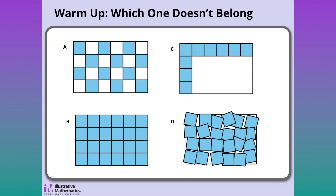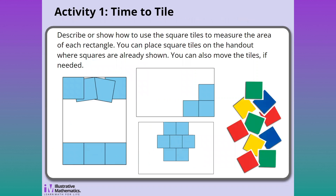There's no right or wrong answer to 'Which One Doesn't Belong,' and it gives teachers an opportunity to see what prior knowledge, experiences, and language students are bringing to the day's lesson. The warm-up is followed by an activity where students are asked to use square tiles to find the areas of rectangles. In some cases the tiles have gaps or overlaps, and in adjusting these, students solidify the idea that the area of a rectangle is the number of square units needed to cover it without gaps or overlaps.